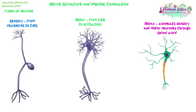We're going to look at the structure of nerves today and how impulses — electrical impulses or action potentials — are conducted down them, and how they transmit those signals along the body of the cell. We're also going to look at things that can affect how fast those signals transmit. There are three types of neurons: the sensory, the motor, and the relay neuron.